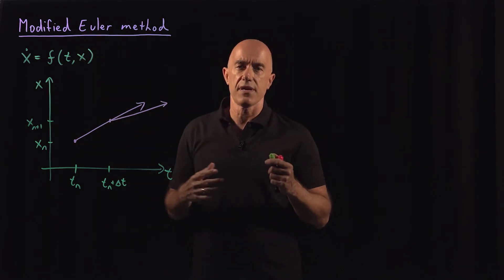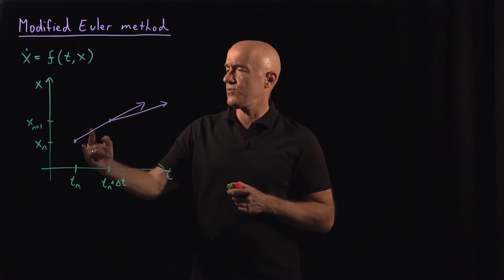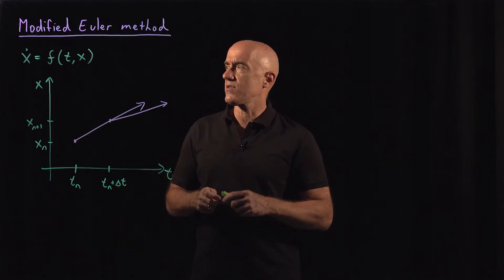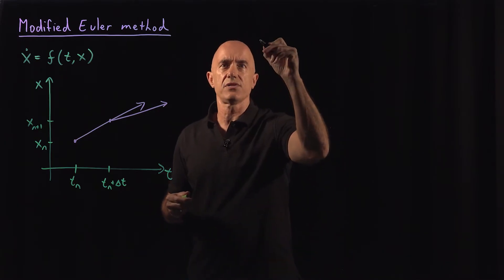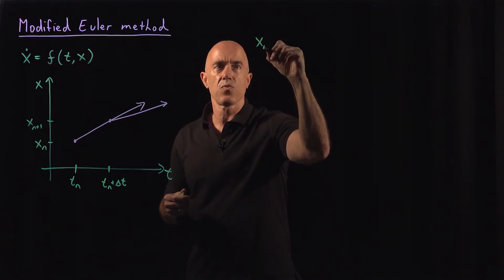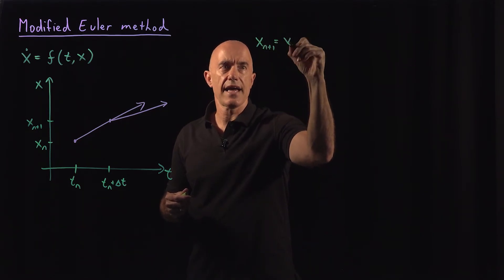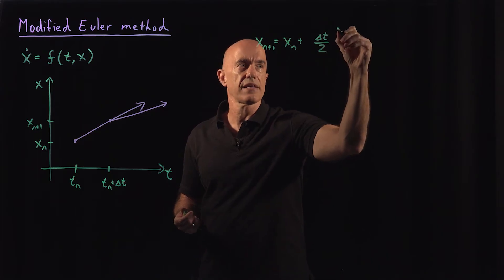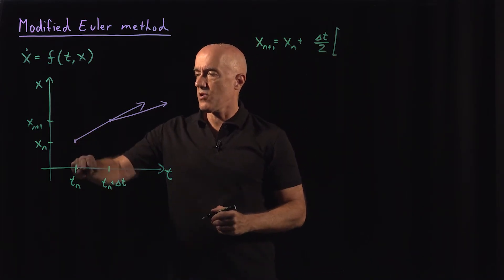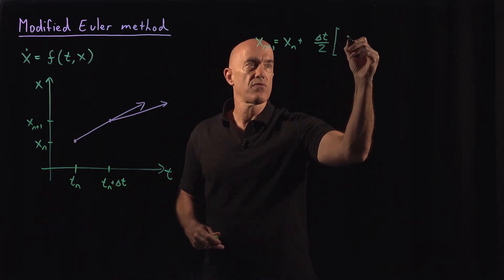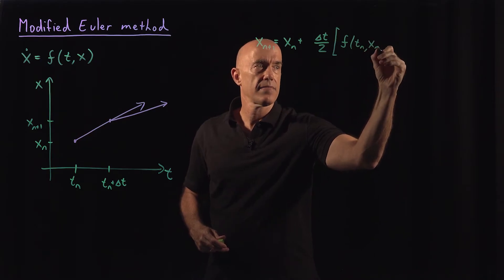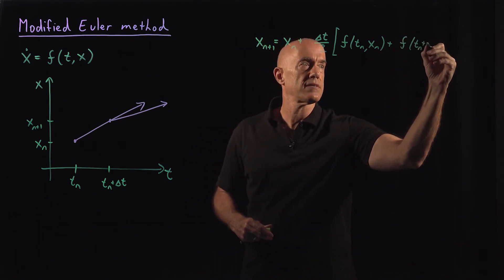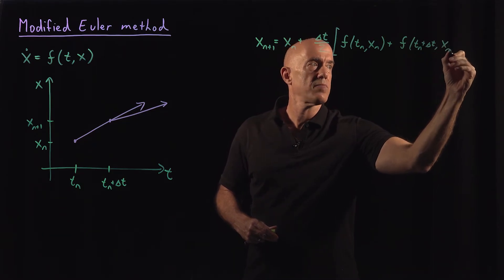The modified Euler method says: we have these two slopes, so why don't we take the average of those two slopes? Naively, you can write down a formula for the average. We would have x_{n+1} equals x_n plus delta-t divided by 2, times the slope at the first point — f of t_n, x_n — plus the slope at the second point — f of t_n plus delta-t, x_{n+1}.